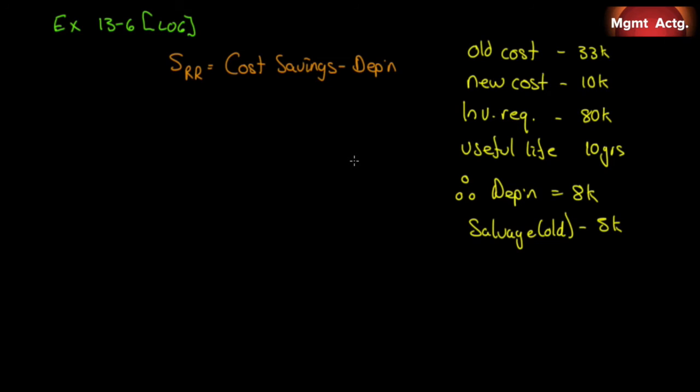The old machine currently in use could be sold now for a scrap value of $5,000. The new machine would have a useful life of 10 years with no salvage value. So I've summarized the important points here: the old machine costs us $33,000 a year to run, the new one will cost us $10,000, the investment required is $80,000, 10 year useful life, so it'll have $8,000 of depreciation a year, and we can get $5,000 for the old machine now.